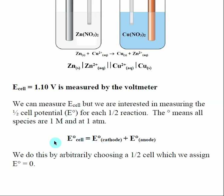The overall cell potential is related to one species' ability to give up electrons and the other species' ability to gain electrons — combining those two gives the potential for the electrochemical cell to work. To establish these half-cell potentials we need a reference point, and we do this by creating a half cell that we arbitrarily assign E° = 0. This is important because every value in a table of standard reduction potentials is based on that reference half cell being E° = 0.